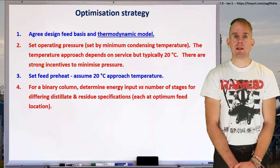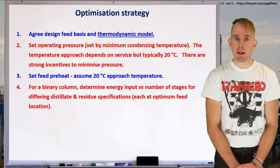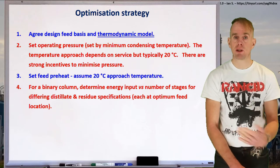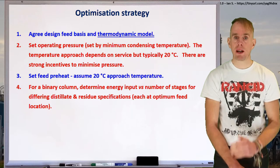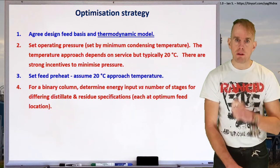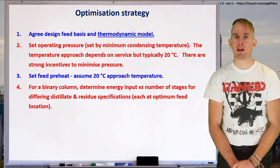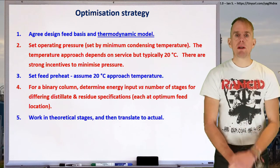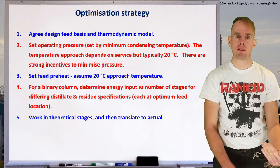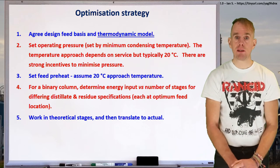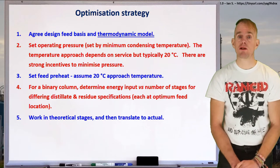The next thing to think about is energy use. Typically we're going to look at energy input versus the number of stages for varying specifications of distillate and residue. We'll also look at energy use for the feed location for a set number of stages. In that way, we can figure out what the ratio between stages in the rectifying section and the stages in the stripping section are, and then figure out from there what the total stage count should be. When doing work like this, always work in theoretical stages first, then translate into real stages using real design data for a similar case, or if not, using efficiency correlations such as Murphree vapour phase efficiency.